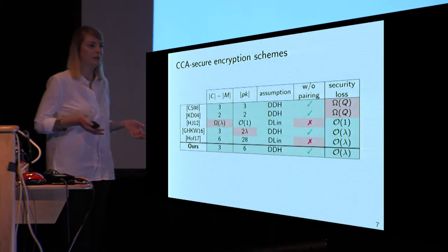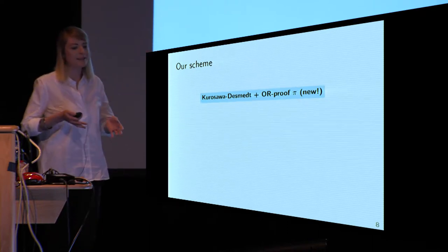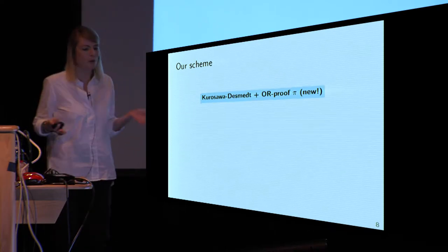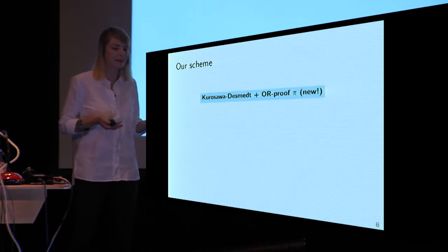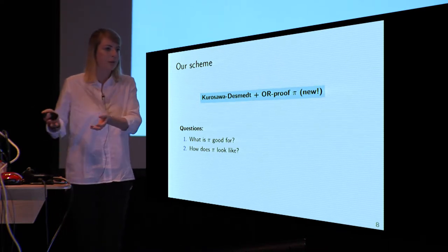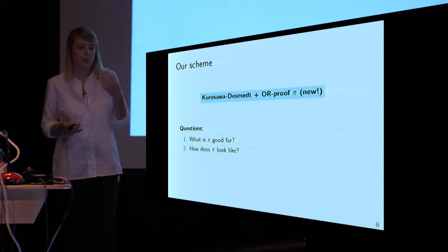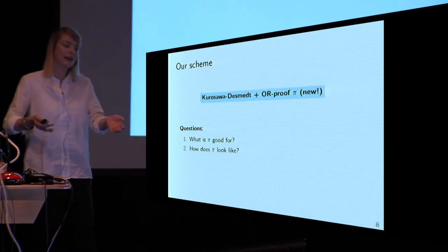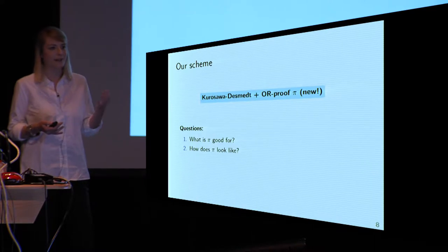So how does our scheme look like? I can tell you in one line: our scheme is Kurosawa-Desmet — the scheme from 2004 — plus one OR-proof π, where this proof π is some new proof. You might have a number of questions: how does Kurosawa-Desmet look like? What is π good for, why do we need it, and why does π enable a tight security reduction? And secondly, how does π look like? In the following, I want to answer all of these questions, stepping back to the foundations and then explaining Kurosawa-Desmet and why it is not tight.